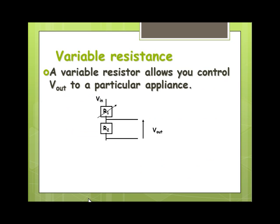Now, what happens if we put a variable resistor in? That means we can adjust the variable resistor and gain control over what V_out is — allowing us to determine when V_out can switch an appliance on or off. This is simply like the temperature control on an oven, air conditioner, or electric heater. What are the effects of going to either extreme with the variable resistor?